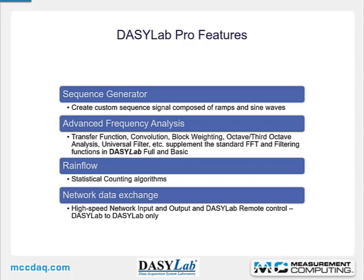DAISYLAB Pro includes a sequence generator for creating custom signal sequences of ramps and sine waves, advanced frequency analysis functions including transfer function, convolution, block weighting, octave and third-octave analysis, and a universal filter. It also includes the RAINFLOW statistical counting algorithms and a feature formerly called DAISYLAB NET — high-speed network input and output and DAISYLAB remote control, which is DAISYLAB to DAISYLAB only. You need two or more cooperating copies of DAISYLAB with unique serial numbers to work with DAISYLAB NET.